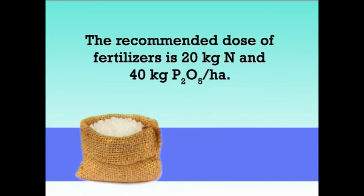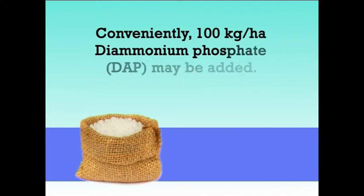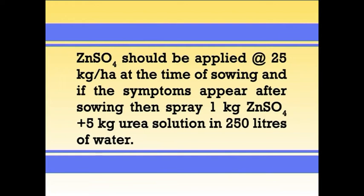The recommended dose of fertilizer is 20 kg nitrogen and 40 kg P2O5 per hectare. Conveniently, 100 kg per hectare di-ammonium phosphate (DAP) may be applied. Full dose of fertilizers should be applied at sowing time. In some areas, zinc deficiency is generally observed after 4 weeks of sowing. Zinc sulfate should be applied at the rate of 25 kg per hectare at the time of sowing, and if symptoms still appear after sowing, spray 1 kg zinc sulfate plus 5 kg urea solution in 250 litres of water.